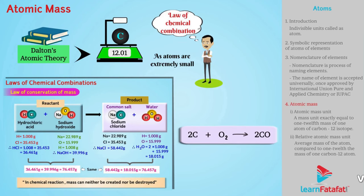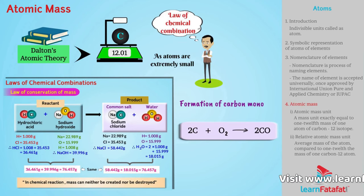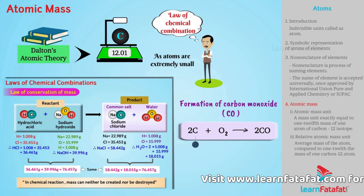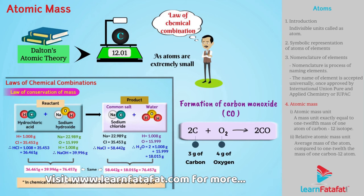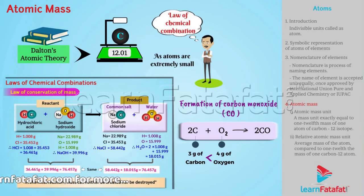Let's take an example. Formation of carbon monoxide requires 3g of carbon and 4g of oxygen. It shows that oxygen is heavier than carbon.